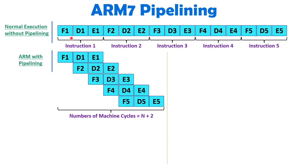Compared to non-pipelining, this execution is very fast. You can say it is almost 3 times faster compared to normal execution.